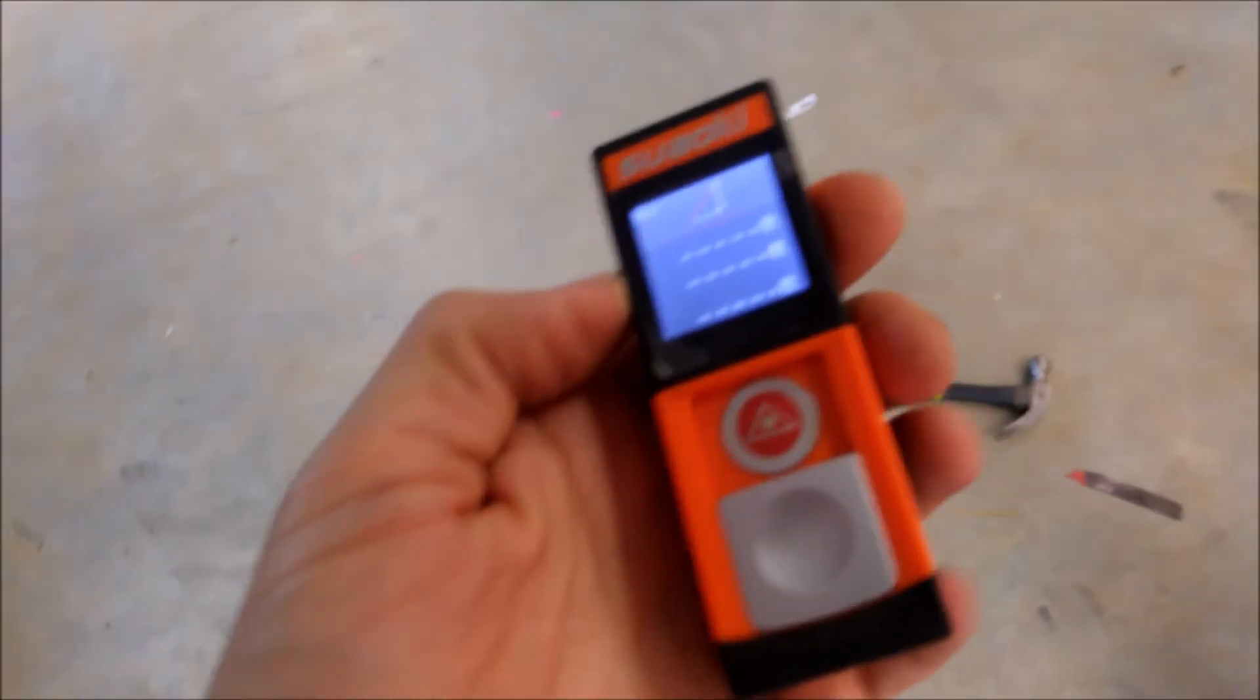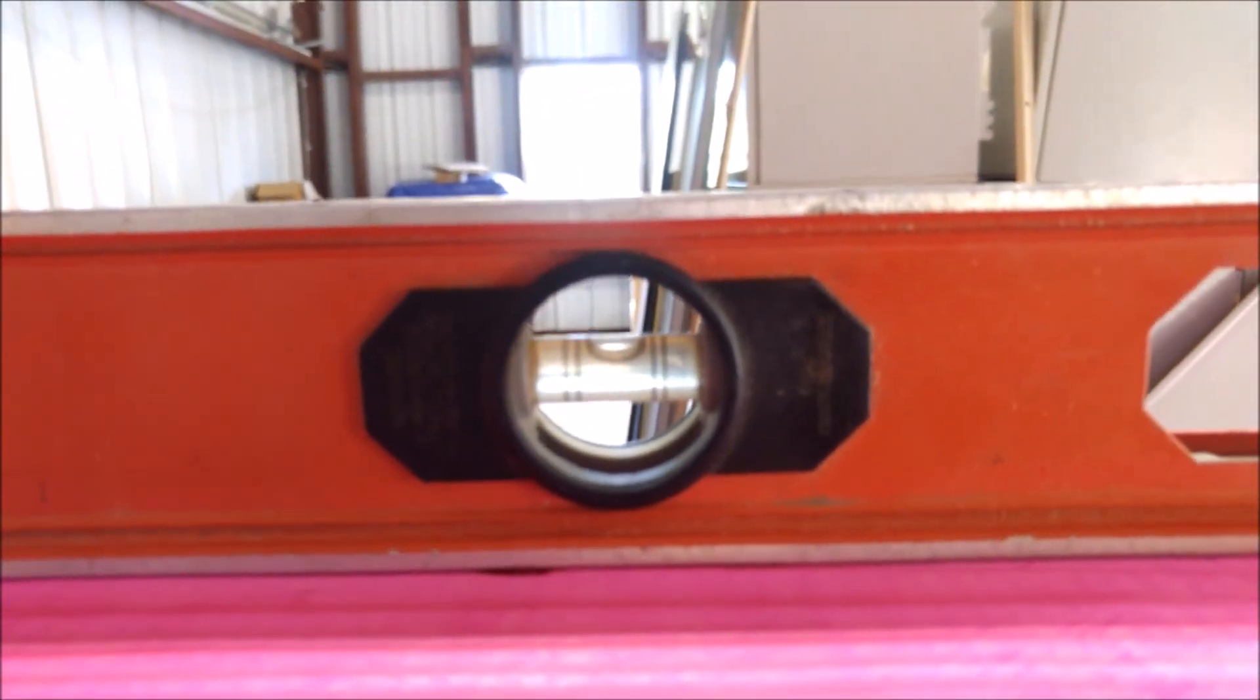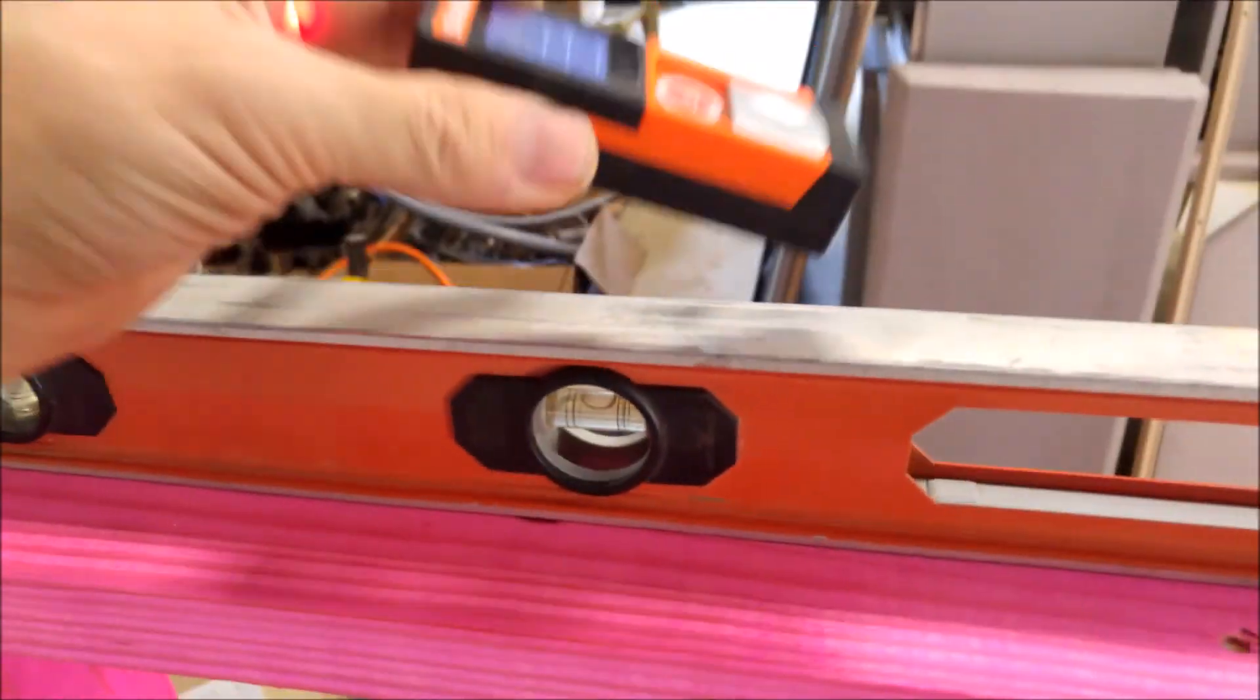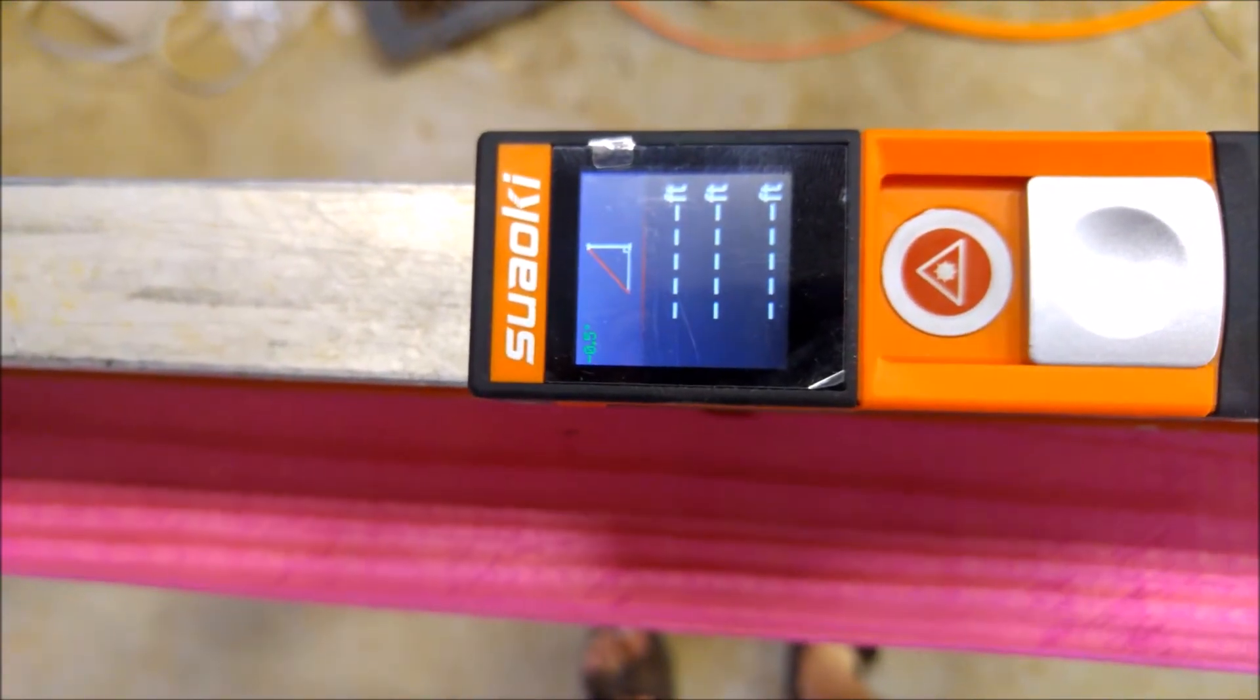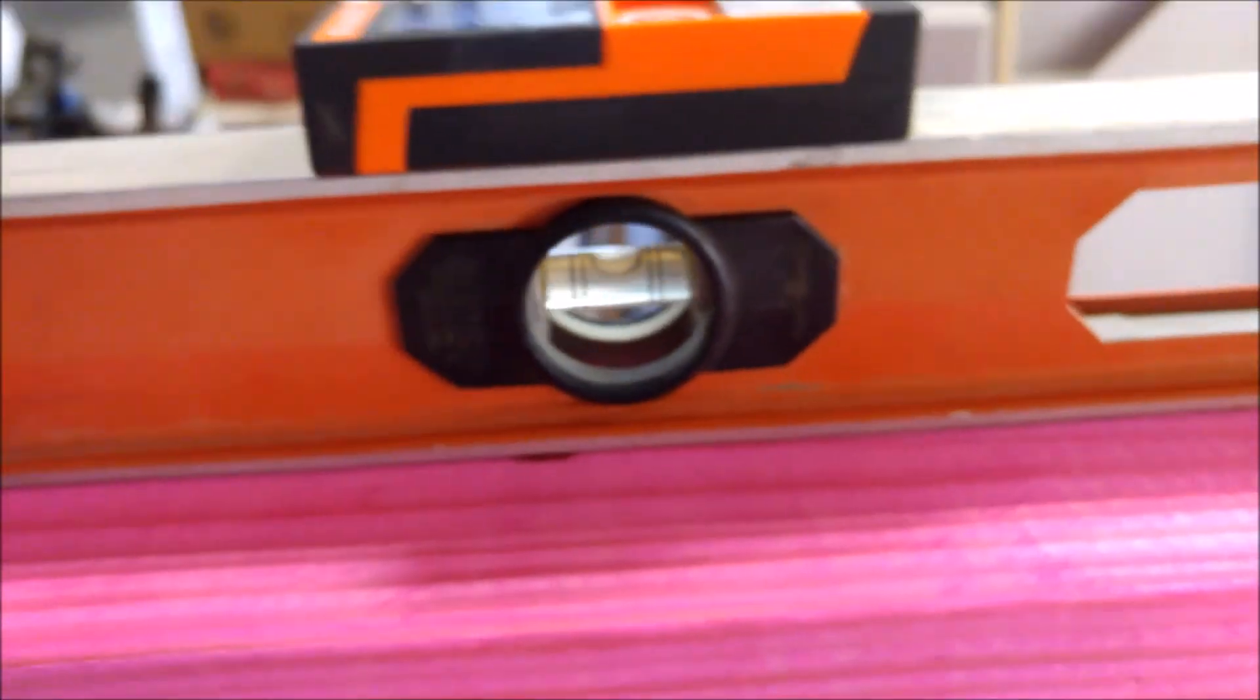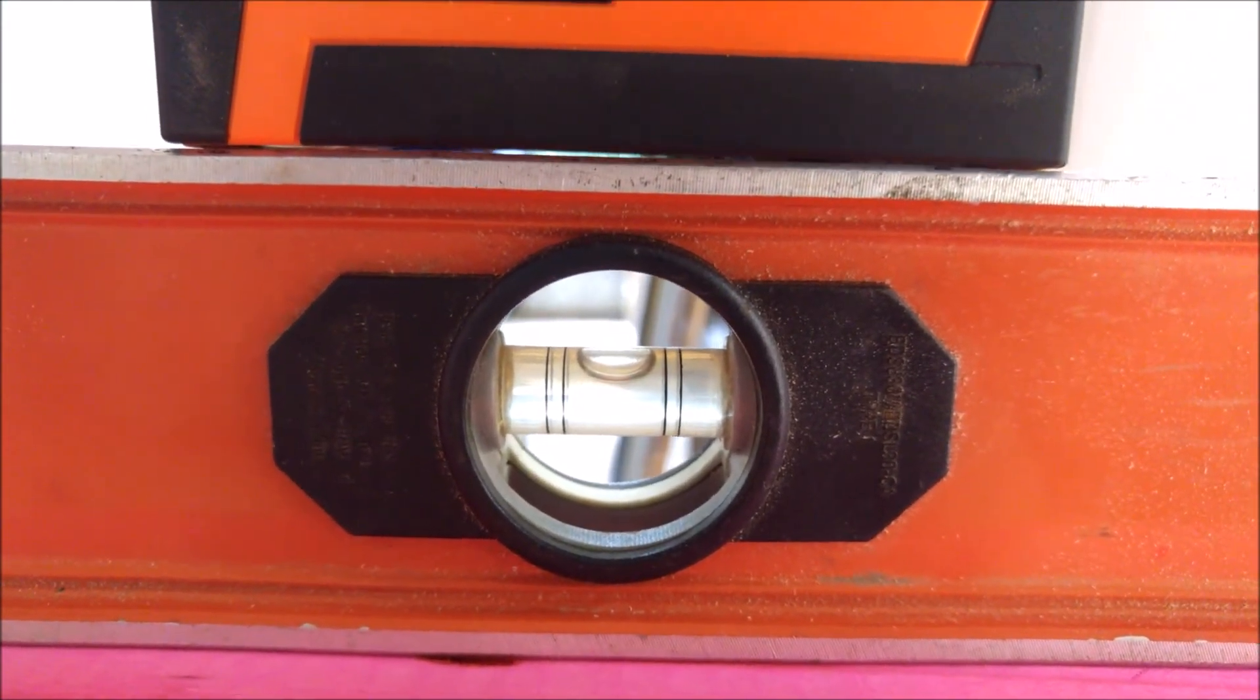I'll show you guys the level function. Here's a window and it is mostly level, pretty close. Go ahead and put this on there. You can see we're 0.5 degrees. So it's about as accurate as that level anyways.